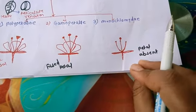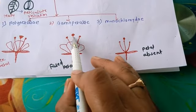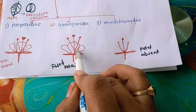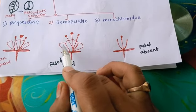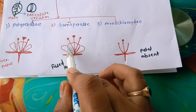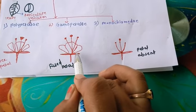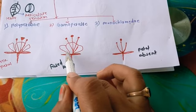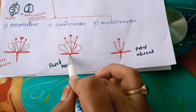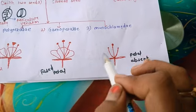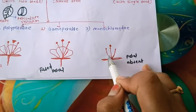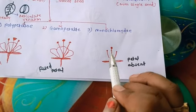In gamopetaly, gamo means fused — the petals are fused together, joined to each other. Looking at the diagram, we can see the sepal and stock. The third type is monoclamide, where petals are completely absent.